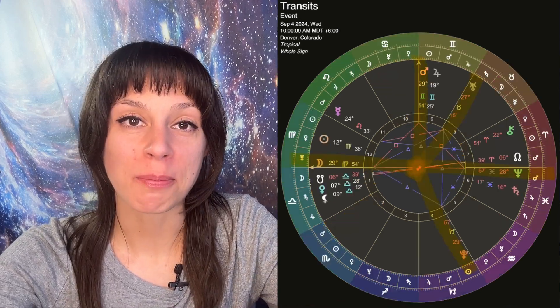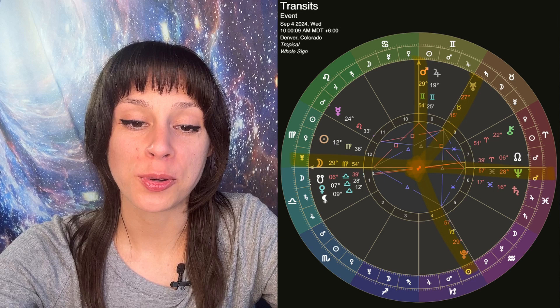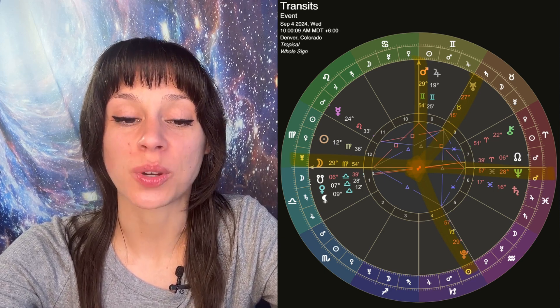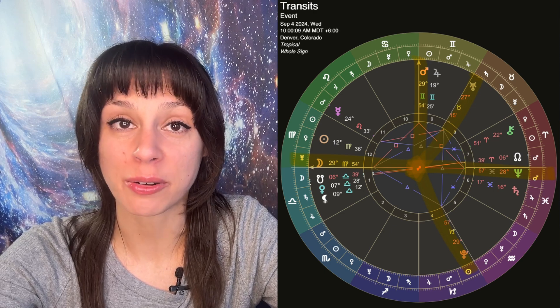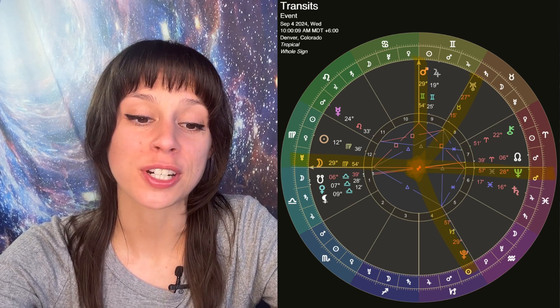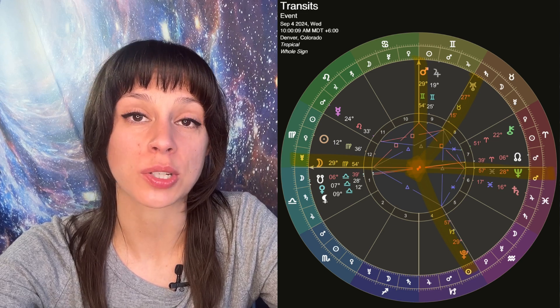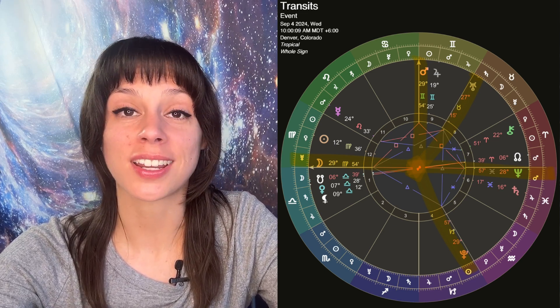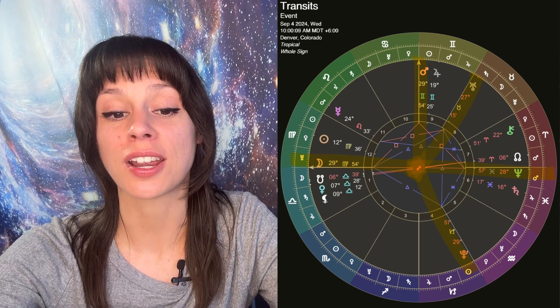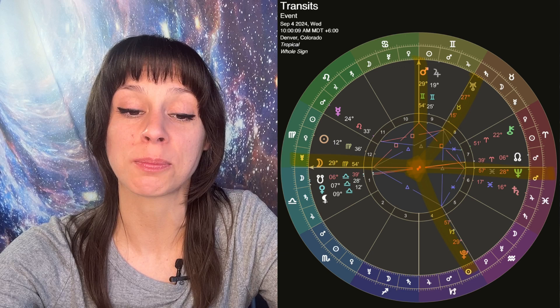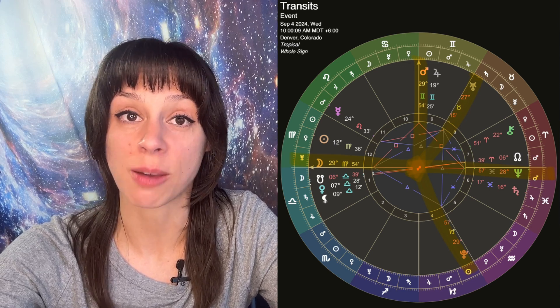On Wednesday, September 4th, the Virgo moon will move through the last degrees of Virgo. And as it does that, it's going to be aspecting three outer planets moving retrograde in addition to Mars. First, it will make a trine to Uranus retrograde at 27 Taurus. Then it will oppose Neptune retrograde at 28 Pisces. And then it will square Mars at 29 Gemini and trine Pluto retrograde at 29 Capricorn.